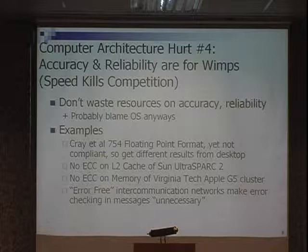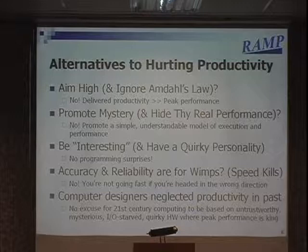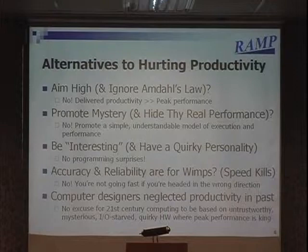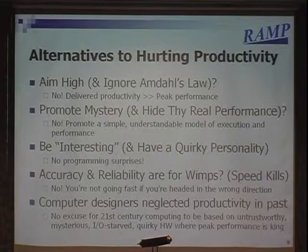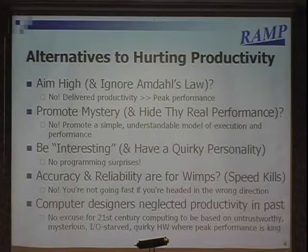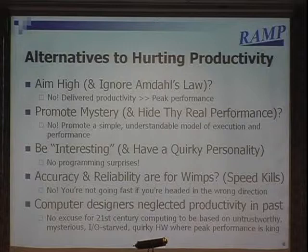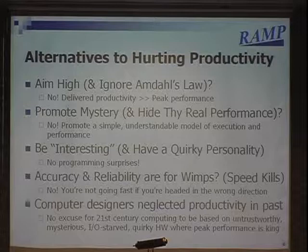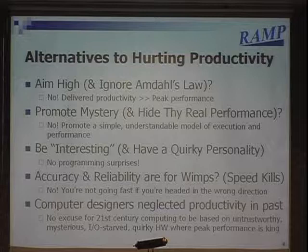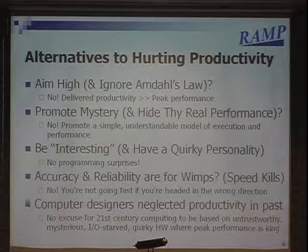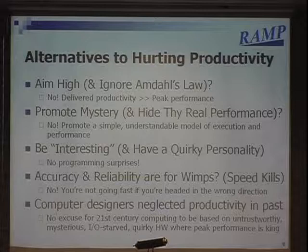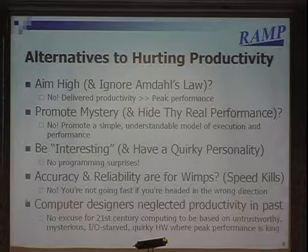That's our legacy of building machines with interesting high performance that don't work very well, leaving it up to programmers to figure that out. If we don't want to hurt scientific productivity, what should we do? Aim high — but let's worry about delivered productivity rather than peak performance. Time for a programmer to solve a problem. Instead of promoting mystery, how about a simple, understandable model of execution performance? In computer architecture there are fads — vector was a very effective idea that PhDs in physics could understand. We replaced it with newfangled VLIW and superscalar and out-of-order, which are much more modern and general, but almost impossible for a person with a PhD in physics to understand how to program. Somebody who can get a PhD in physics can't figure out how to use the computers we're making.